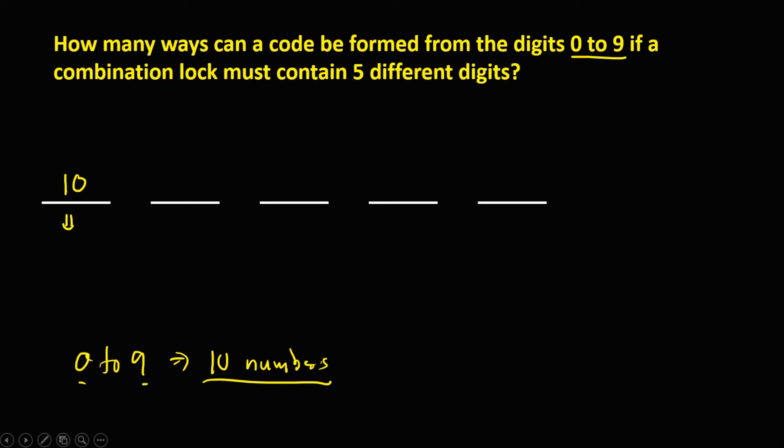And for the second code, minus 1 because we already used one number for the first code, so this becomes 9 possible numbers. And for the third code, that's 8 possible numbers, so minus 2.